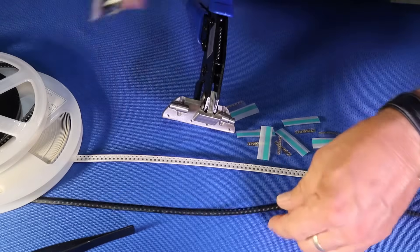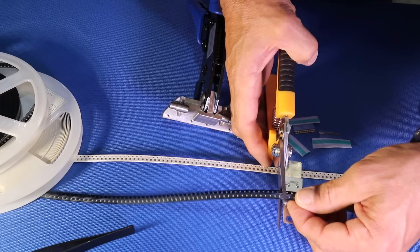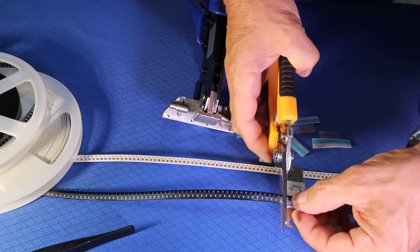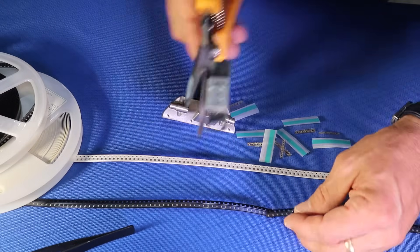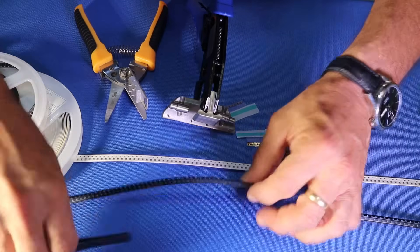First, we're going to cut the carrier tape using the cutting tool. You don't necessarily need the cutting tool, but it gives you a much more accurate cut when you're first starting.